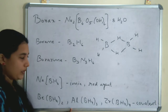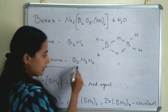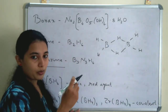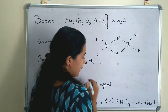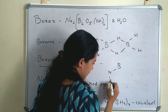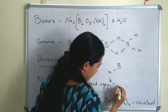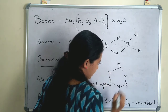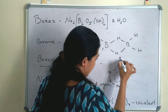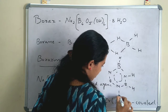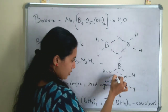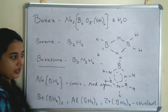Another important boron compound is borazine, B3N3H6. It is similar to a benzene ring and has some chemical properties similar to benzene. The structure of B3N3H6 has alternating B and N atoms in a six-membered ring with alternate double bonds between B and N.